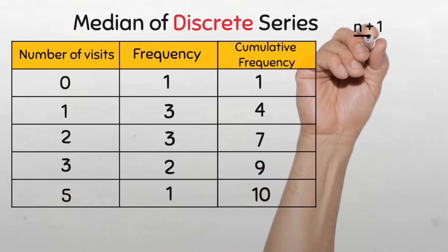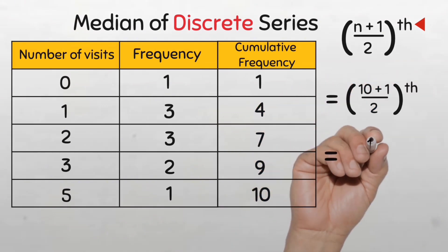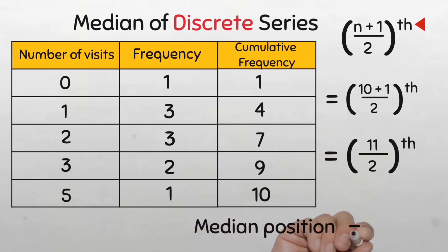The formula for locating the median position is n plus 1 divided by 2. Notice the th here because the formula just gives us the position. So the median position is 10 plus 1 divided by 2, that's 11 divided by 2 giving us the 5.5th position. Now we know the position of the median. Next we will need to locate the median value. To do this we'll also use the cumulative frequency.